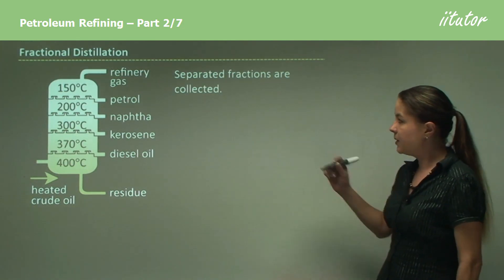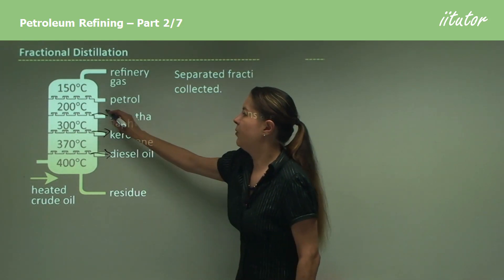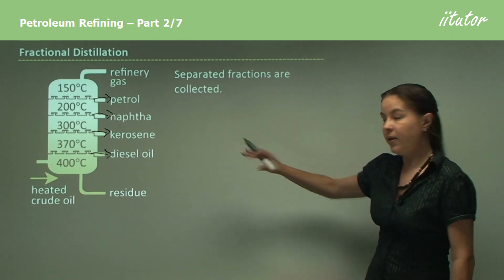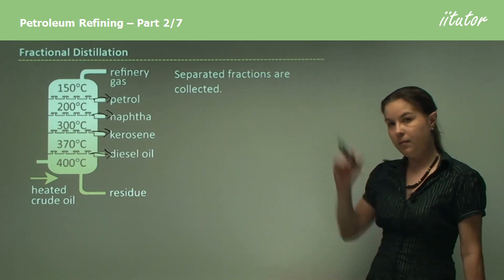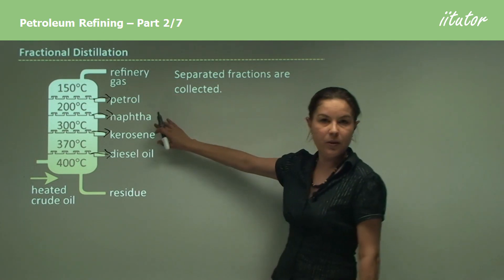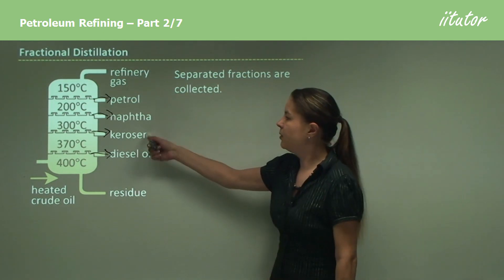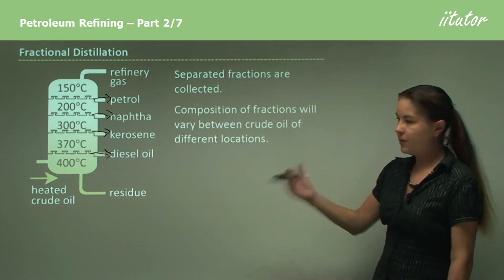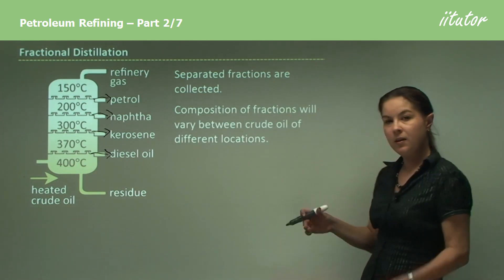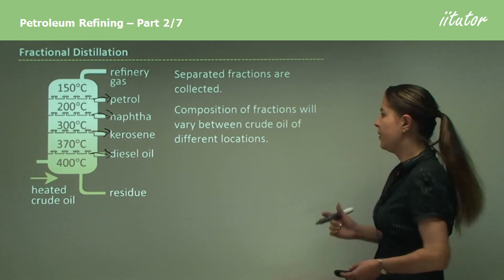What happens is we then collect these fractions. As you can see, these are a few examples — there are many things that come off from petroleum. These are just a few examples: petrol, naphtha, which is used for making chemicals, and diesel oil. The separate fractions will come off and we collect them at different boiling points, so they'll be pure, not just one big heap of everything together.